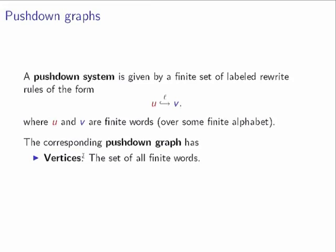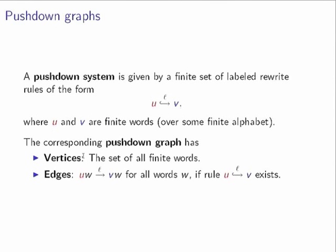When can you go from one word to another? It's basically prefix rewriting. If you have a rule saying u goes to v by label L, then you have an edge from u·w to v·w for all suffixes w. Push-down systems are a very established class of infinite structures, and I guess most of you know this class.